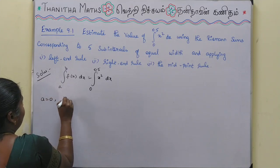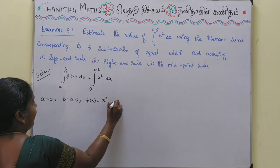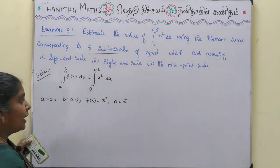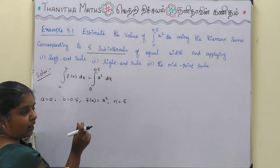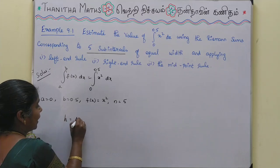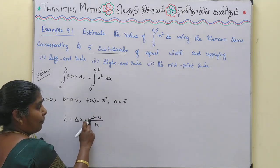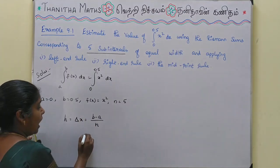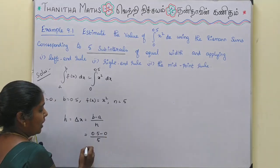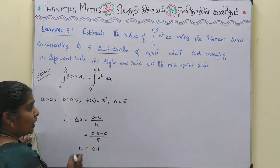The value of a is 0, b is 0.5, f(x) is x², and the number of sub-intervals n is equal to 5. We now find the width h, which equals delta x. The formula is h = (b - a) / n = (0.5 - 0) / 5 = 0.1. So h equals 0.1.